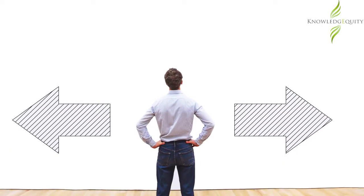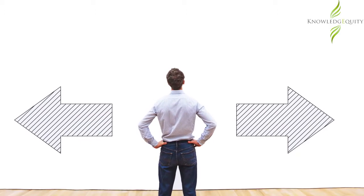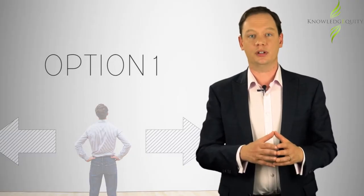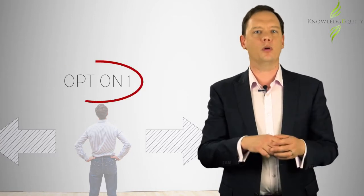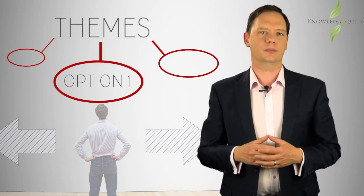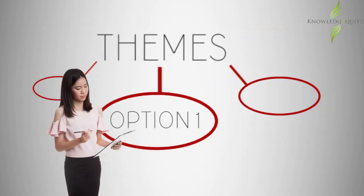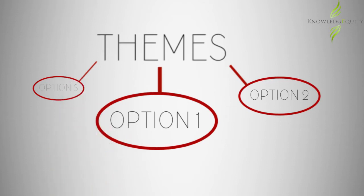Not every company will follow the process the same way, but it is common that strategic options are developed first and evaluated before being grouped into themes. Once management has covered key considerations like the amount of resource available to implement the options, they will look to group the options into strategic themes.